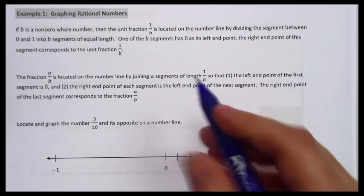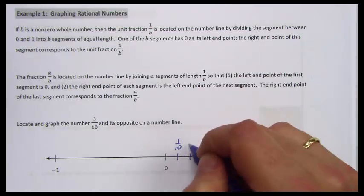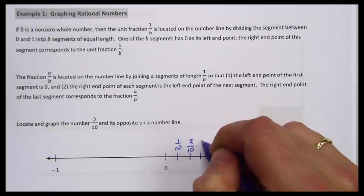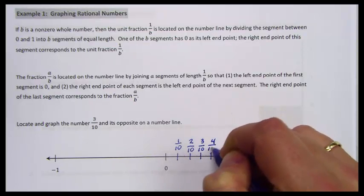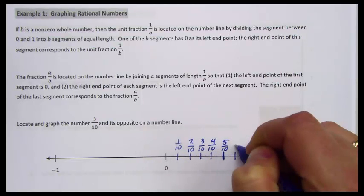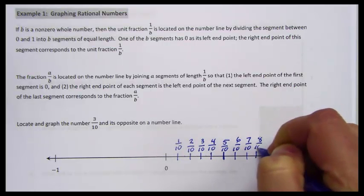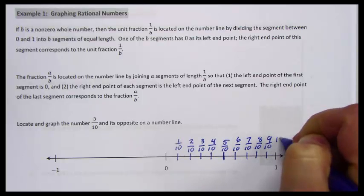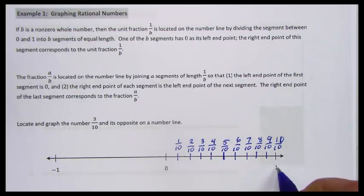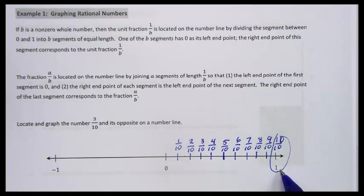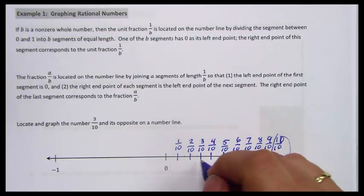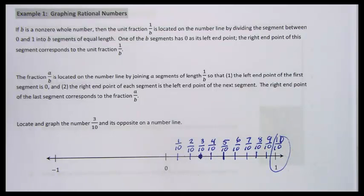Each of these segments is a tenth. This is one-tenth, two-tenths, three-tenths, four-tenths, five-tenths, six-tenths, seven-tenths, eight-tenths, nine-tenths, and the last one is ten-tenths, which equals one whole. Ten-tenths is the same as one whole — it's like a double number line. If we want to find three-tenths, we count one, two, three units over. So there is three-tenths.